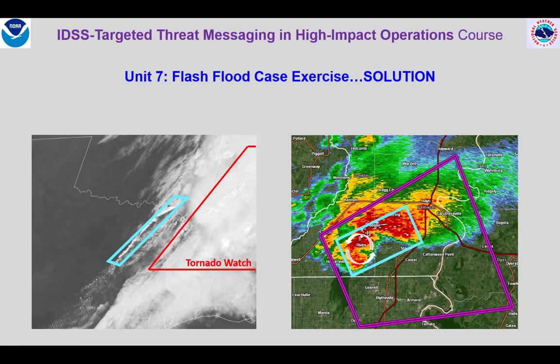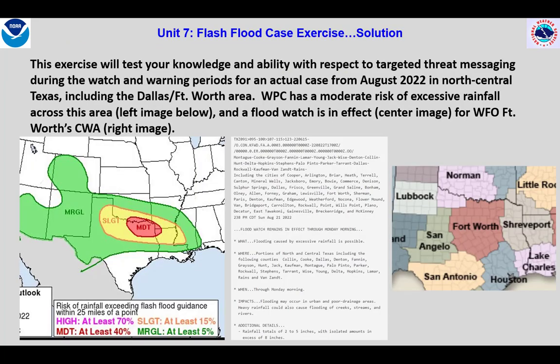Welcome. This video provides the suggested answer key to the Unit 7 Case Exercise for the IDSS Targeted Threat Messaging Course. Our exercise focused on a potential heavy rainfall event in northern Texas, as illustrated by WPC's Excessive Rainfall Outlook. It covers a pretty large area, as does the flood watch covering much of WFO Fort Worth's forecast area. We want to try to downscale the threat message with some lead time before flooding initiates.